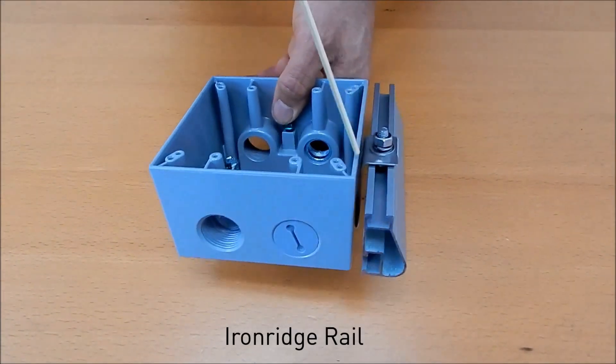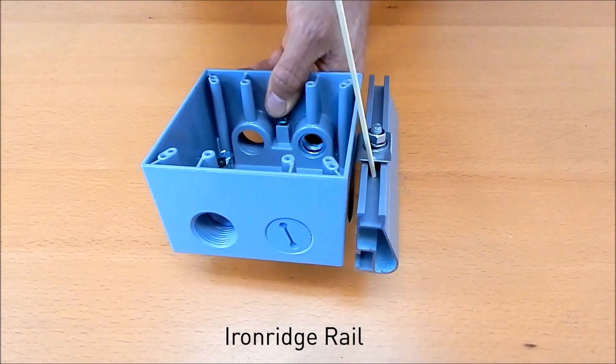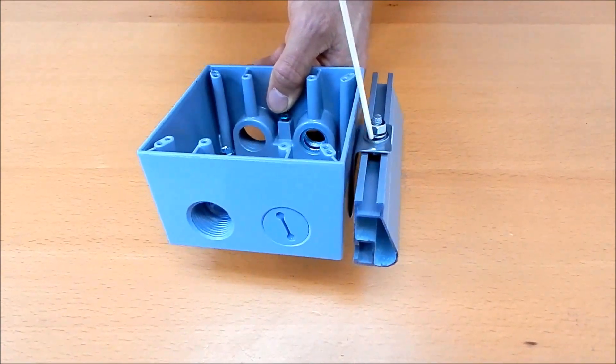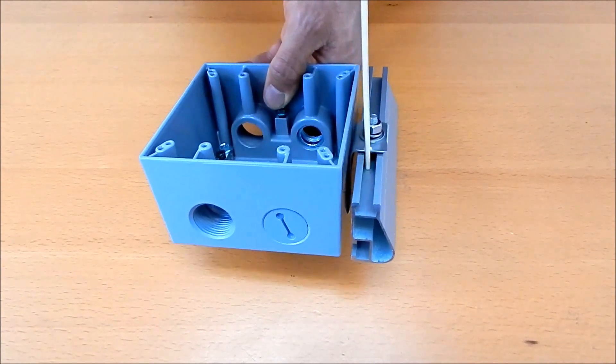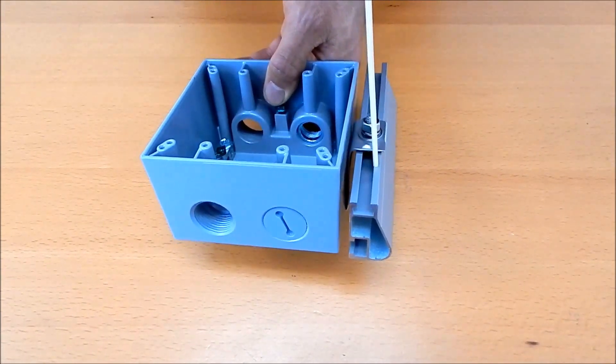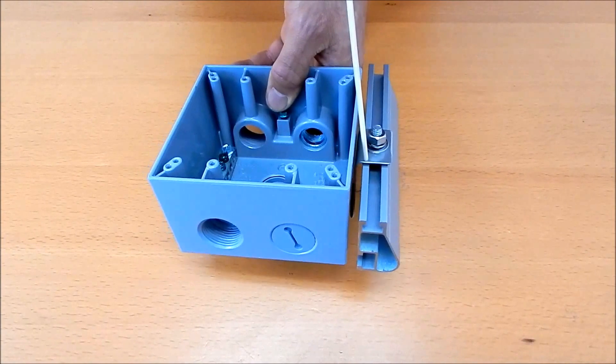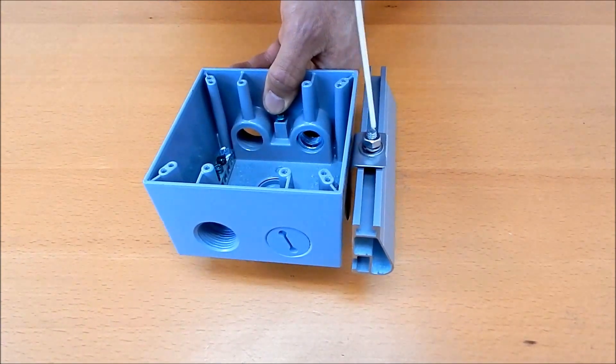This is the stainless steel bracket, and it's attached to an Iron Ridge XR-10 rail. It basically just requires you to put the bolt upside down into this channel and slide it down, put a star washer on. Then you put the bracket on and then secure it with a nut.